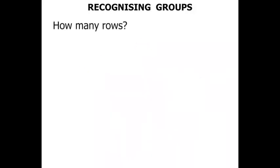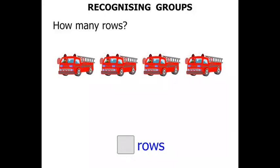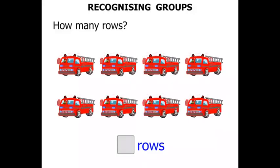How many rows? We'll write our answer down here. One row of fire engines. Two rows of fire engines. We've got two rows.